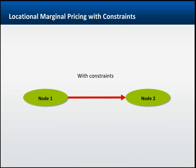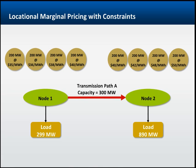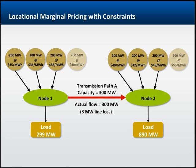If there is a transmission constraint between two nodes, then each node will have a separate price based on the marginal clearing price at each node. Looking at the same example again, but this time the capacity of path A is constrained to 300 megawatts. Now the optimal schedule can no longer be used, since path A would be overloaded. To accommodate this situation, the fourth unit in node 1 is not scheduled, and the third unit in node 2 is used in its place. Now actual flow on path A is 300 megawatts, which matches line capacity, and all loads can be served. Since there is a transmission constraint, each node is treated separately for LMP purposes. The price in node 1 is set by the $38 unit, and the price in node 2 is set by the $48 unit.